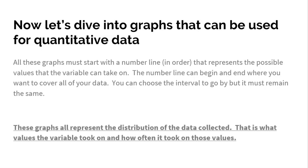Now let's focus on how to make graphs of quantitative variables. All of these graphs start with a number line that goes in order and represents the possible values the variable can take on. The number line can begin and end wherever you want, as long as it covers all your data. You can choose the interval — by fives, tens, twos, twenties, fifties — that's up to you. These graphs all represent the distribution of the data: what values the variable took on and how often.